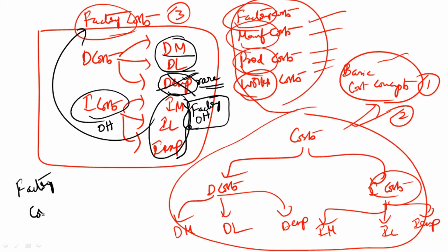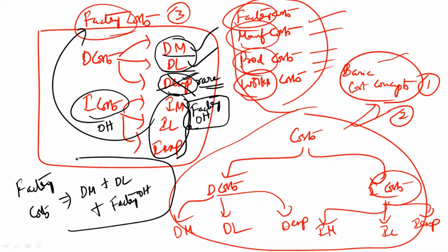Therefore: factory cost = direct material + direct labor + factory overheads. Direct expenses are ignored because they are very rare. All the indirect costs together are called overheads, and since they are inside the factory, they are referred to as factory overheads.